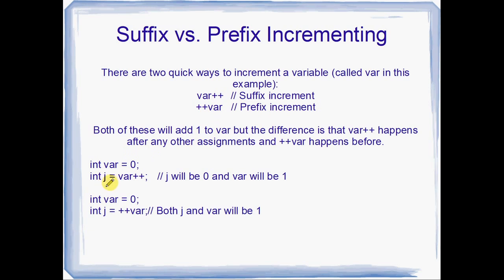I've just drawn up a little example down here. With var++, oh sorry, if we say int var equals zero, and then int j equals var++, the assignment is going to happen first. So this assignment, j equals var, is going to be performed first, and then var is going to be incremented. It's going to have one added to it. So in this first example here, using the suffix increment, j is going to have zero, since it's going to get the value of var when var is zero. And then var is going to have the increment applied to it, so it's going to become one.